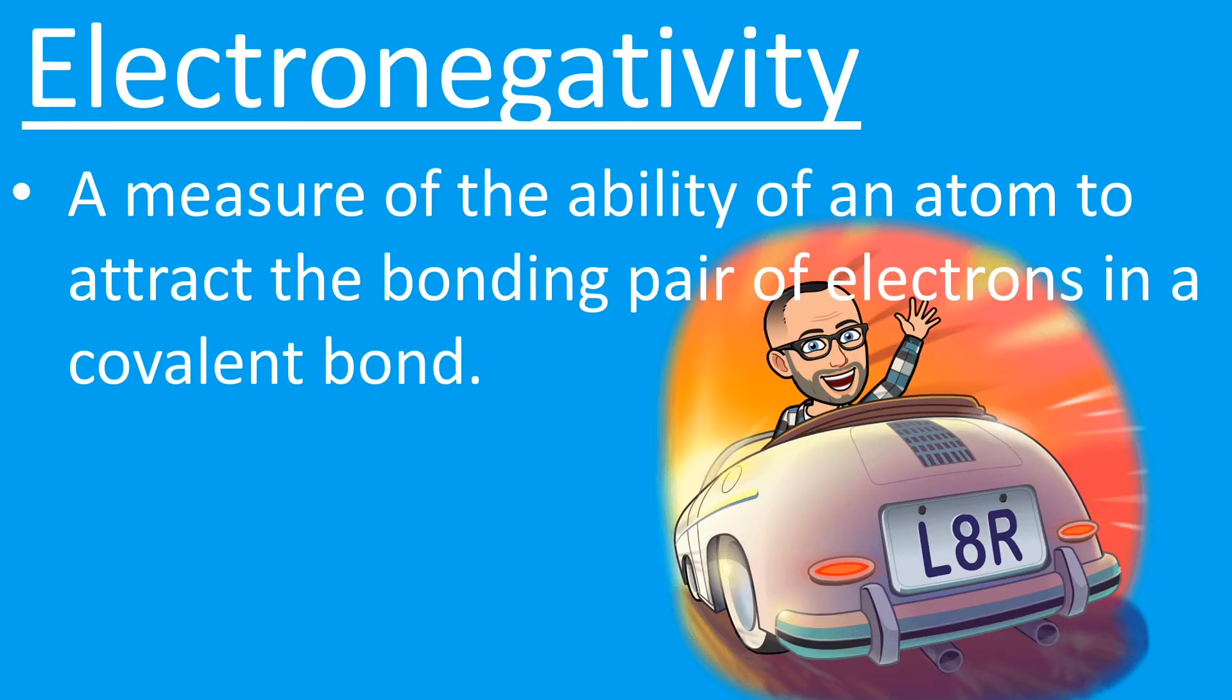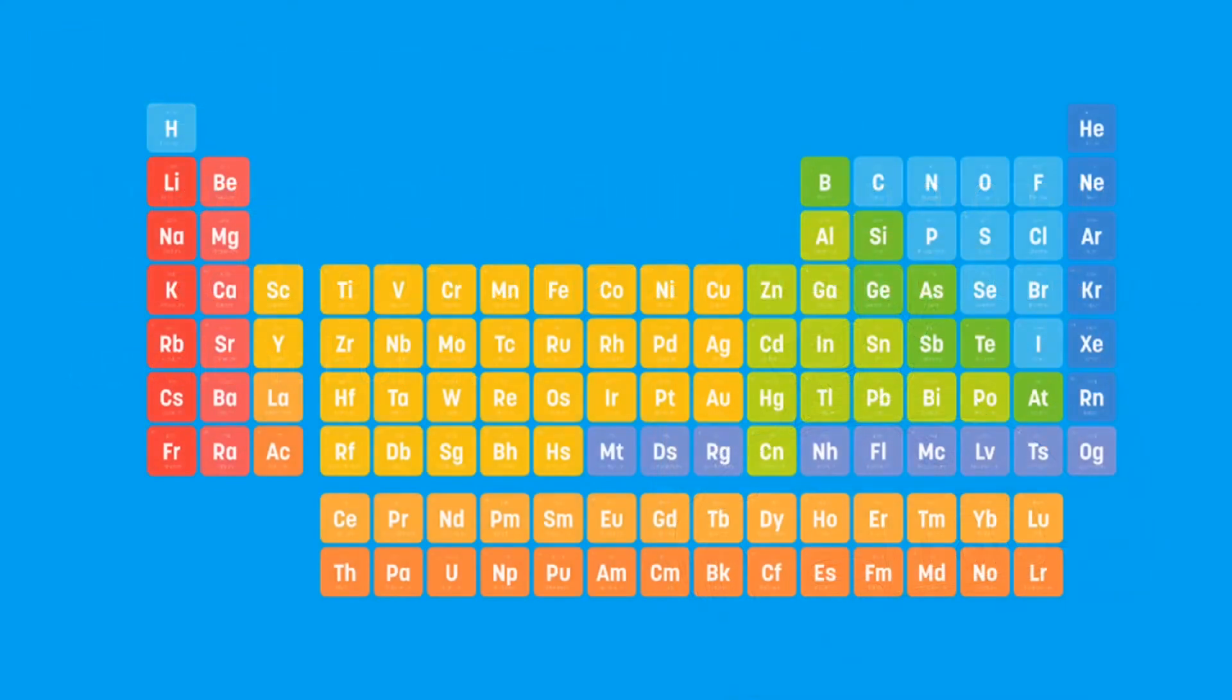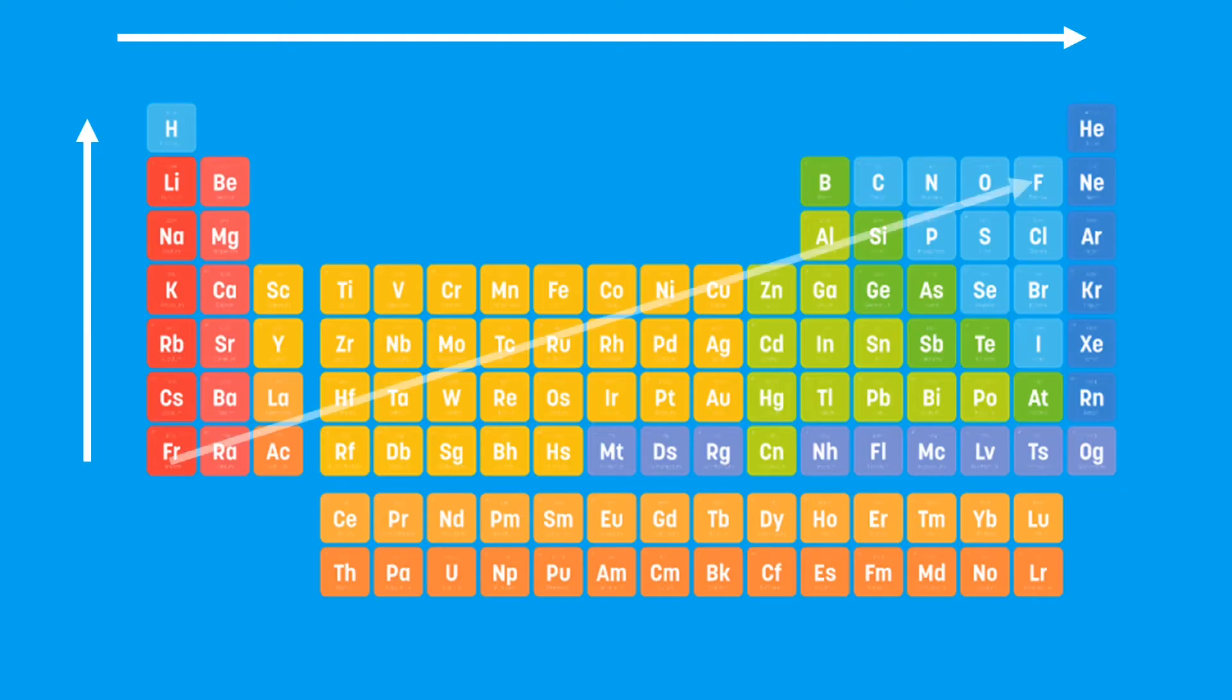But for now, all we need to be aware of is that as we look at the periodic table, if we move from left to right, electronegativity increases. Also, if we move from bottom to top, electronegativity increases. So that means electronegativity increases from bottom left to top right.